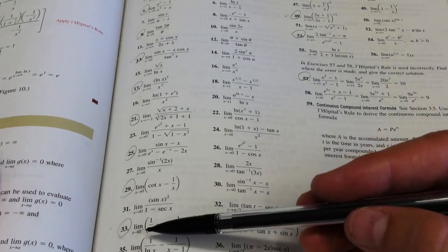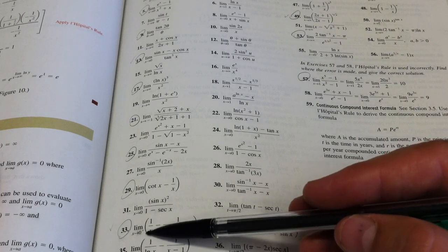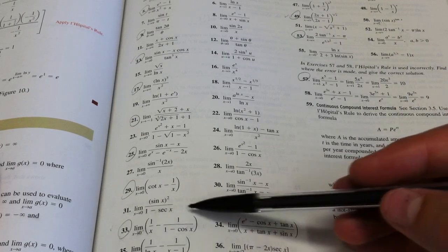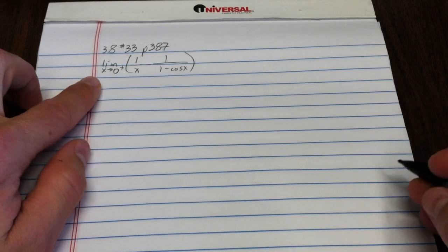So this limit specifically is the limit as x goes to 0 from the positive side of 1 over x minus 1 over 1 minus cosine x. I went ahead and wrote that problem down for us right here.